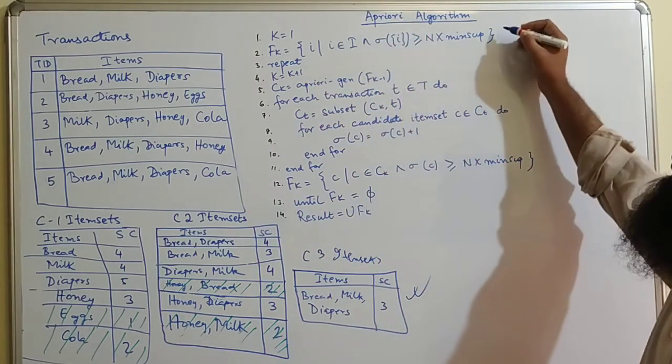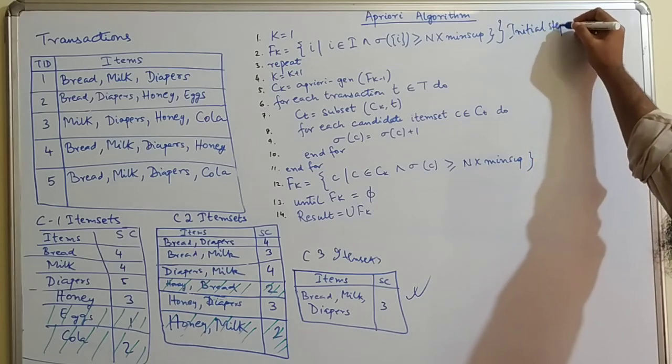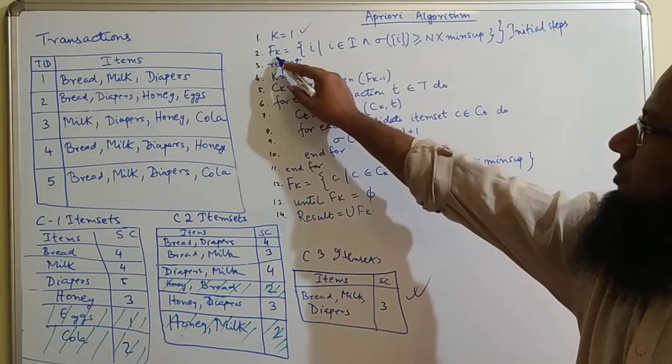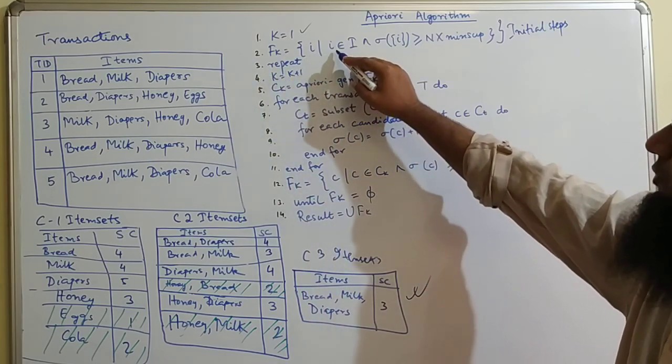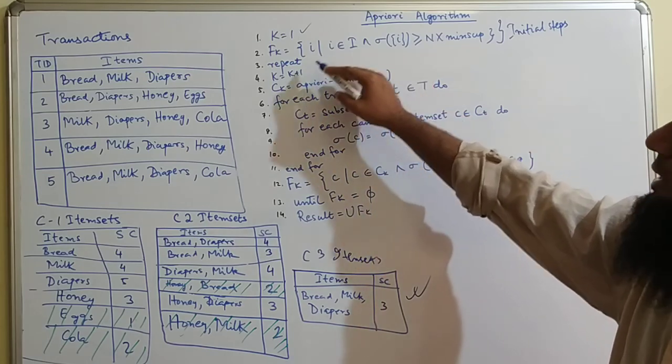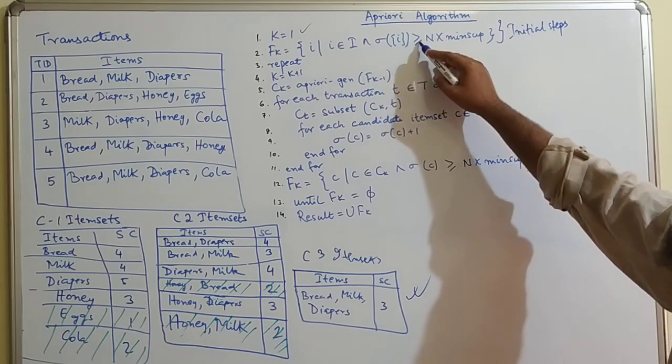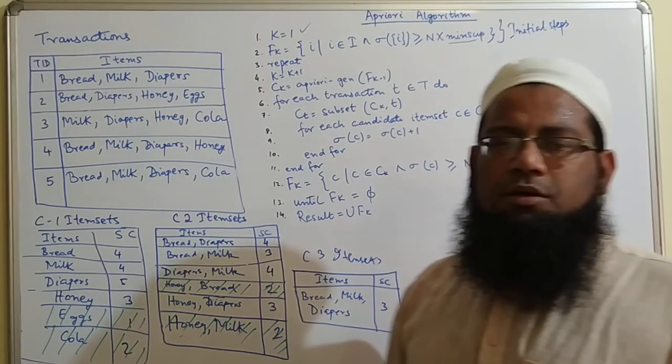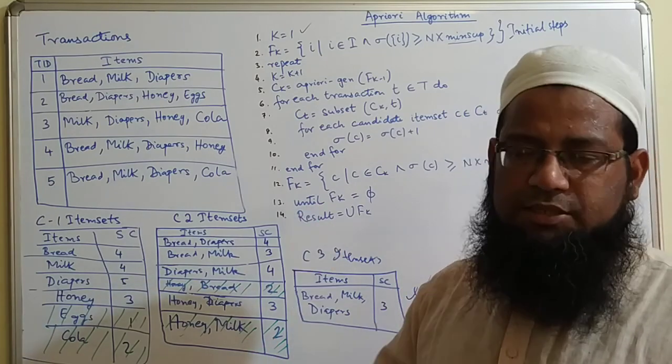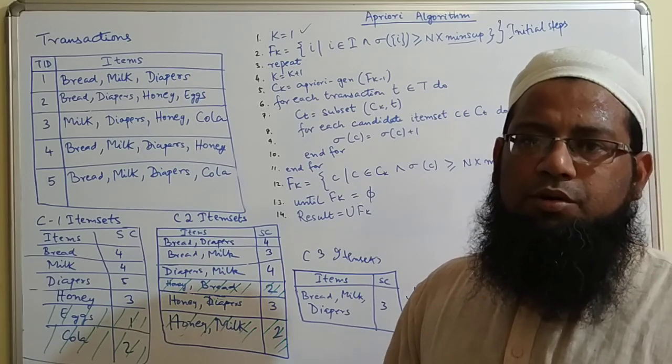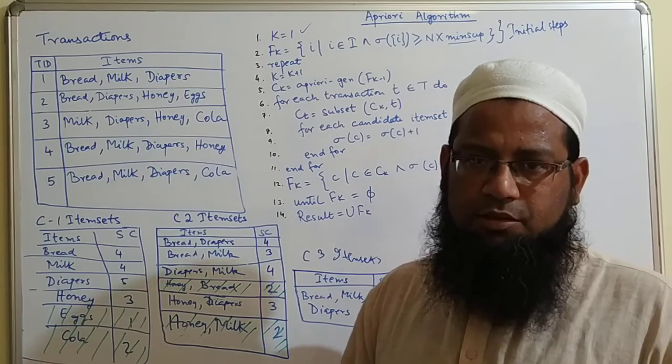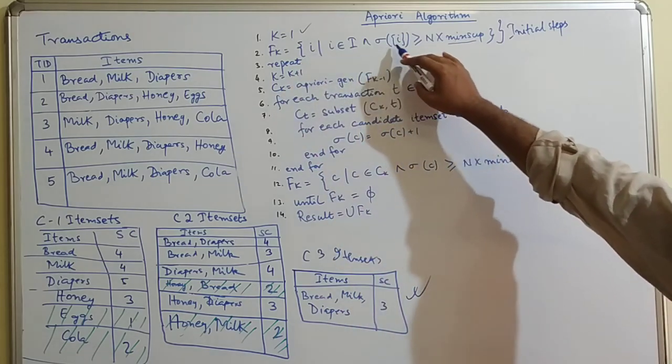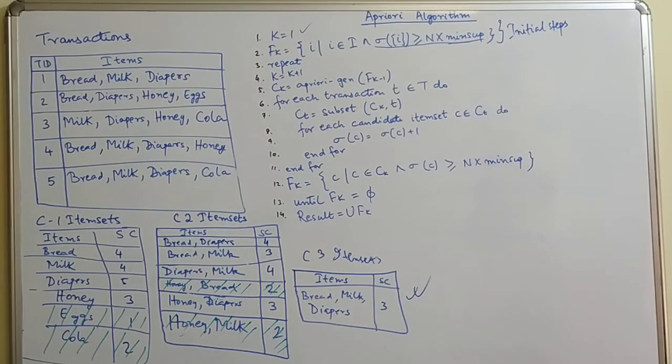These two steps are the initial steps of the algorithm. So k equals 1, where k is a variable, f of 1 equals i where i belongs to capital I. Here I indicates the item sets, and the support of i is greater than or equal to n times minimum support. This minimum support is the threshold. In previous videos we've seen when you have a threshold, you multiply with the number of transactions, shown here as n, to get the minimum support count that you should have for the item set. So f1 equals those items whose support satisfies this condition.